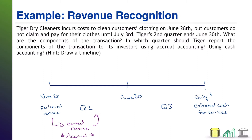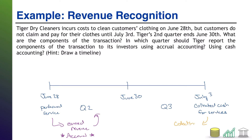Cash basis accounting is very different. It doesn't matter when you're performing the service or fulfilling the obligation. Under cash basis accounting, cash is the only thing that matters. The day you collect the cash, you are in essence collecting your revenue. Therefore, under cash basis accounting, you would report your revenue in Q3, not Q2. That's the difference.